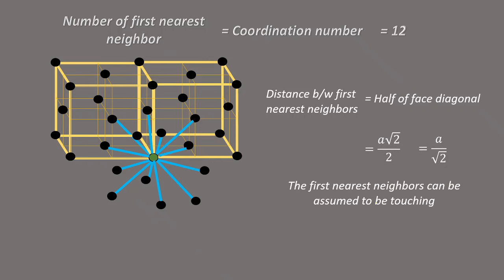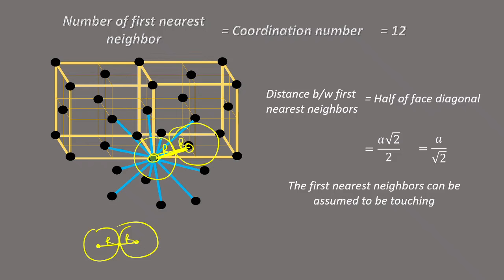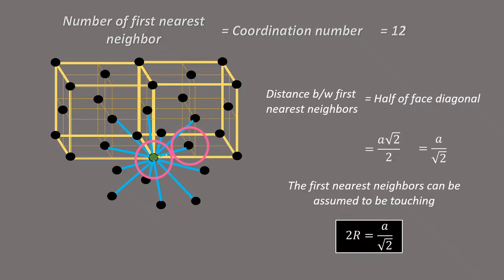The first nearest neighbors can be assumed to be touching, since these are only the centers of the spheres. When two spheres touch each other, the distance between their centers is 2r. The point of contact lies on the line joining the two centers. Therefore 2r equals a/√2, which gives us the relationship between the sphere radius and the lattice parameter a.